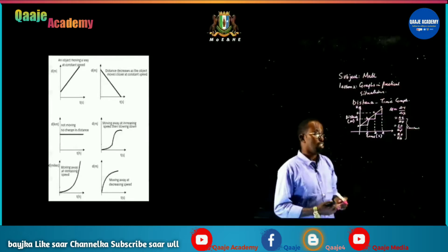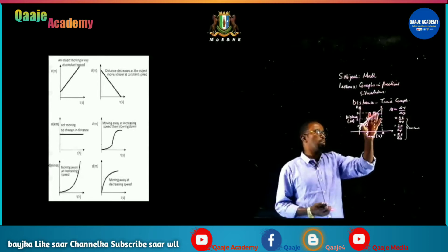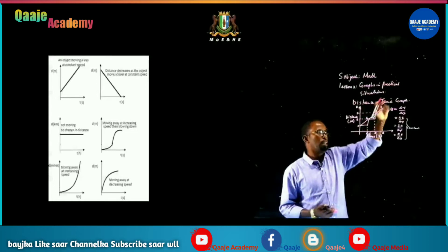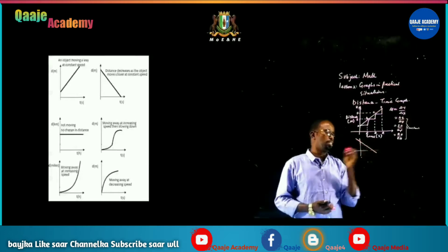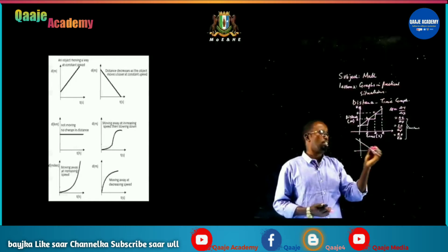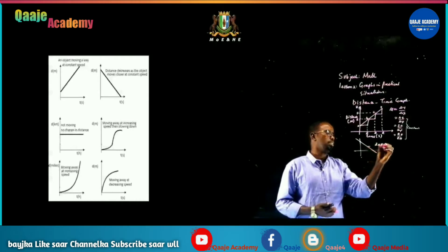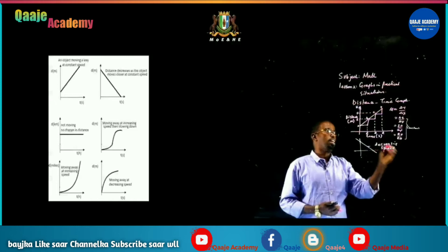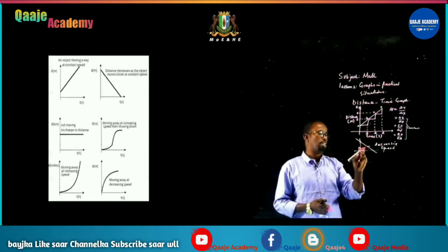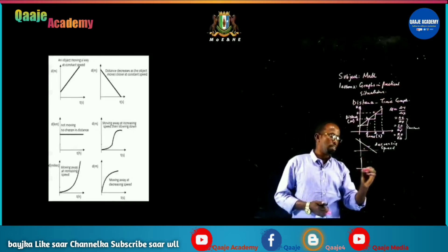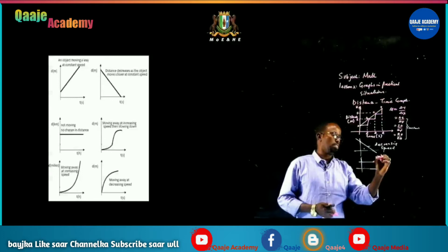The first graph has a positive gradient because it is moving upward. The second one has a negative gradient — that is decreasing speed. So changing y divided by changing x gives a negative value for decreasing speed, and a positive value for increasing speed. The third one has a gradient of zero — that is a state of rest, or stationary.